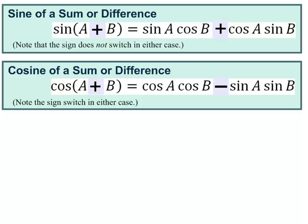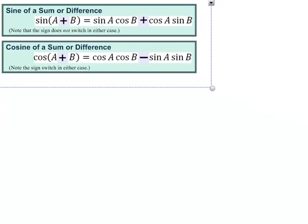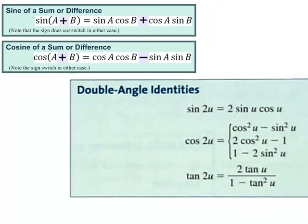For starters, a real quick family tree here. Once we got past the fundamental identities, you know, the Pythagorean identities, the co-function identities, the even odd identities, the reciprocal and quotient identities, once we got past those fundamental identities, we introduced the sum and difference identities. And we realized that once we practiced that and got used to those, when we plugged the same variable in for both A and B into these formulas, that is what gave us the double angle identities.